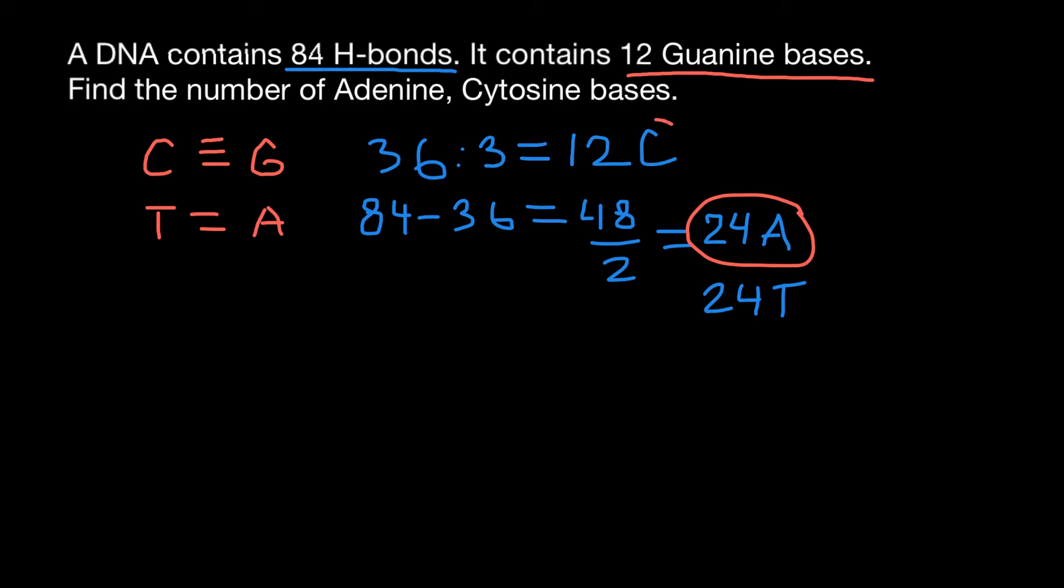This is going to be the answer for the number of cytosines. And we can also say the number of thymines. And we already know the number of guanines which is 12. So we know now the composition of this double-stranded DNA: guanines, cytosines, adenines and thymines.